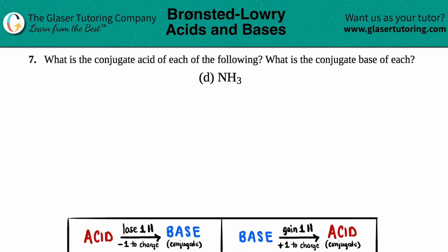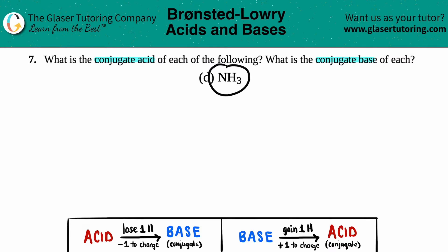Number seven: what is the conjugate acid of each of the following, and what is the conjugate base of each? In this case, letter D, we just need to find the conjugate acid and the conjugate base of NH3.